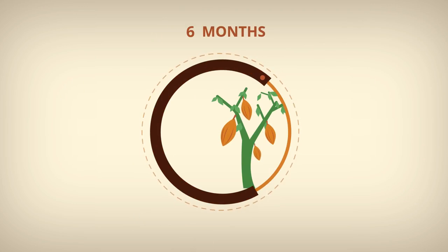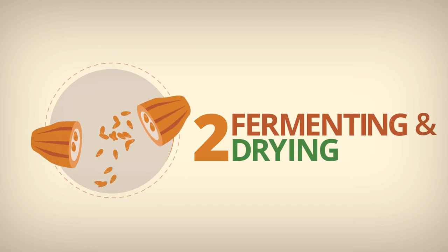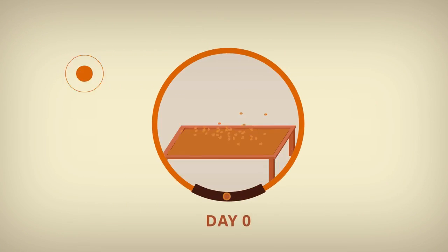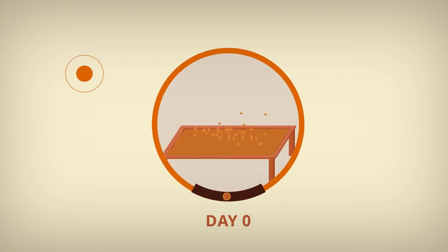Fermenting and drying: Once extracted from the cocoa pods, the beans are covered for five to seven days to ferment. After fermentation, the cocoa beans are left to dry in the sun for about six days.